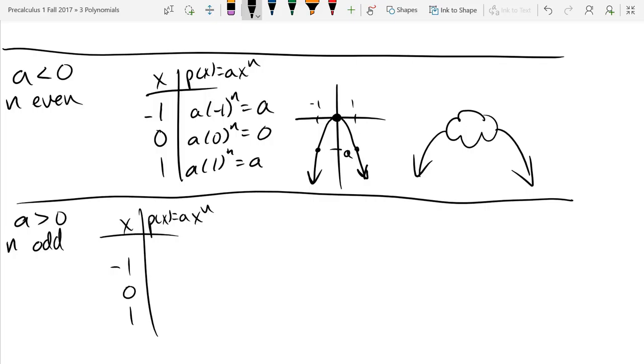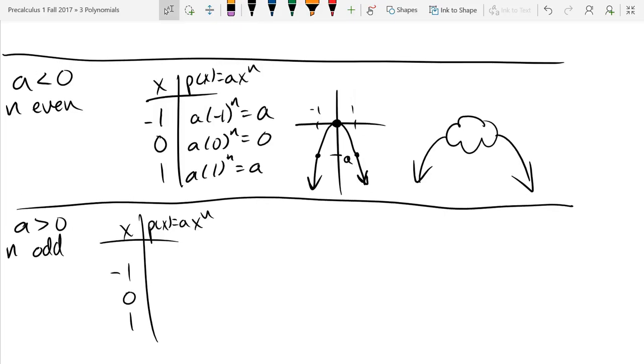All right. So we have n is odd and a is positive. So we're going to plug in negative 1. What is negative 1 to an odd power? Negative 1. Negative 1. So it's going to keep the negative sign. So this is going to be negative a. Next up, a times 0 to the n is 0. That one's easy. And last, a times 1 to the n is just a.